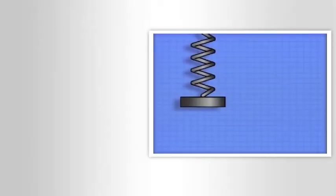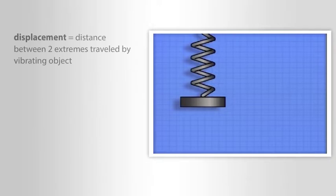Another term used to describe certain features of vibration is displacement. Displacement is the distance between the two extremes traveled by the vibrating object. Displacement is usually measured in mils, which is one thousandth of an inch.